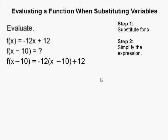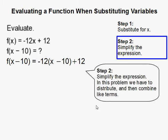But you can't leave it like that, you have to simplify it. The first thing we need to do in this one is distribute, so we multiply this negative 12 times both terms in here.